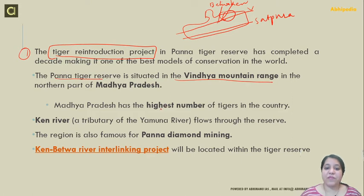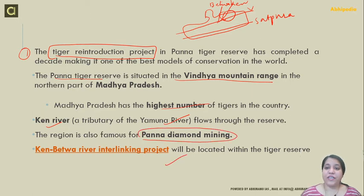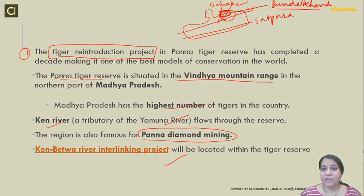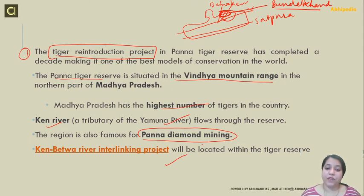Madhya Pradesh has the highest number of tigers in the country. The Ken river is a tributary of the Yamuna. Panna is also famous for diamond mining. There is a Ken-Betwa river interlinking project which links both rivers, because the Bundelkhand region is a relatively dry area needing irrigation. This interlinking project is part of Madhya Pradesh and Uttar Pradesh states.